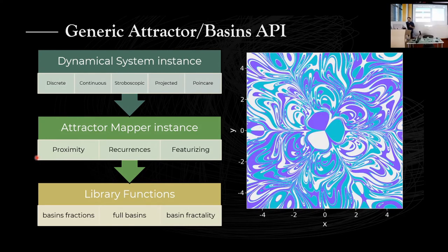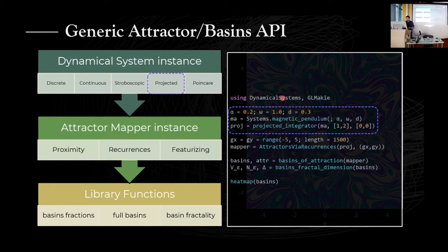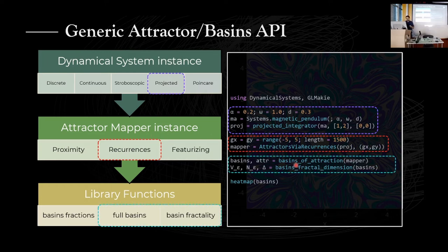To produce the magnetic pendulum picture from the beginning of the presentation, here's how it works in actual Julia code. You first declare the packages — including the dynamical systems library we created, a general purpose software for nonlinear dynamics. The second block declares the dynamical system. The third block specifies the attractor-finding structure. The last step literally calls the function basins_of_attraction, which computes the basins. You can then use this output to calculate the fractal dimension of the basins, connecting to the second part of the presentation.